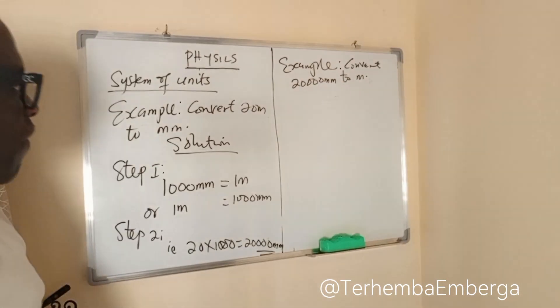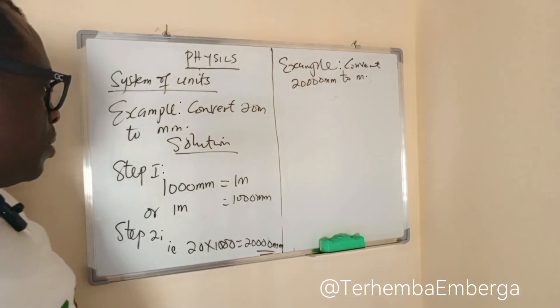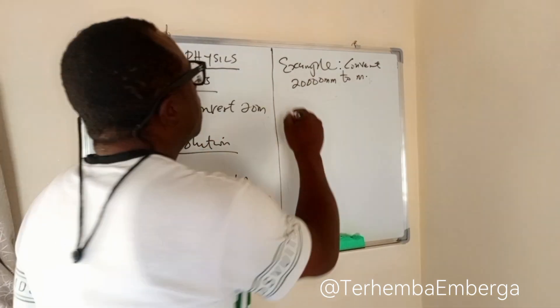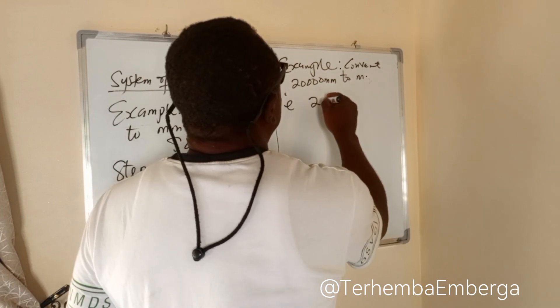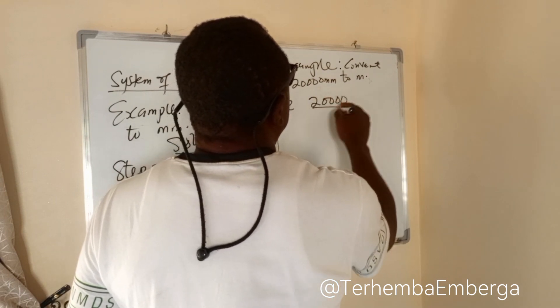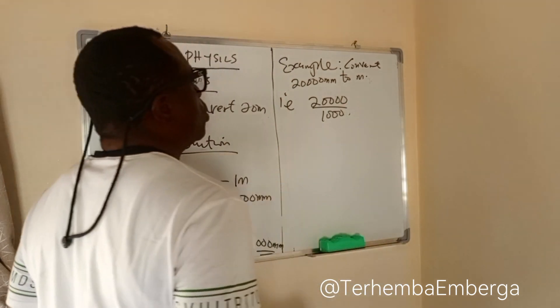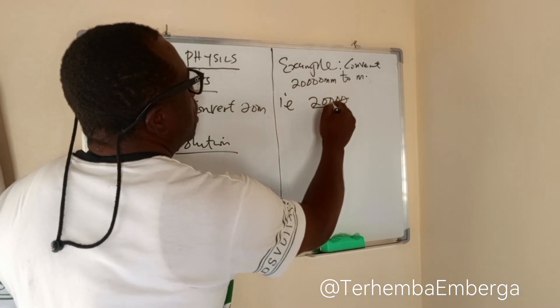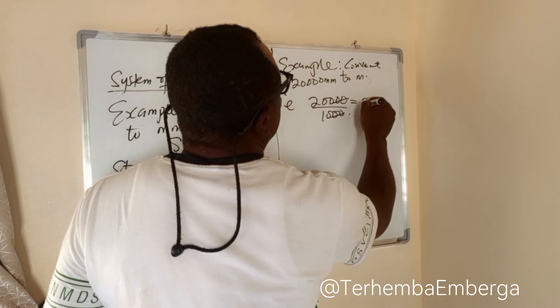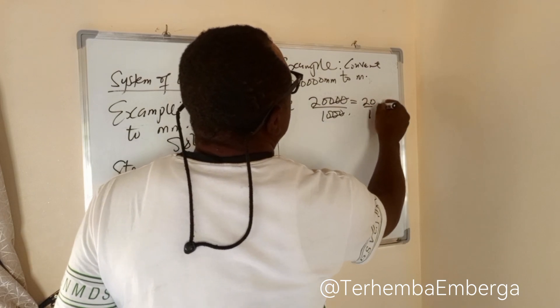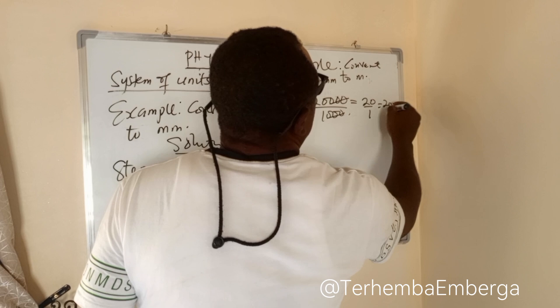That is 20,000 divided by 1,000. So three zeros goes with this. And what you are left is 20 divided by 1, which is equal to 20 meters.